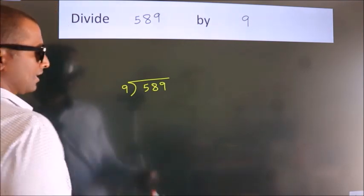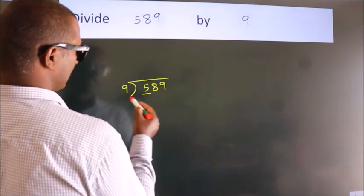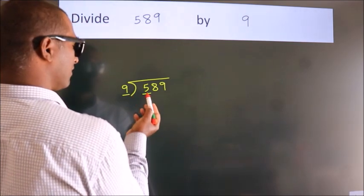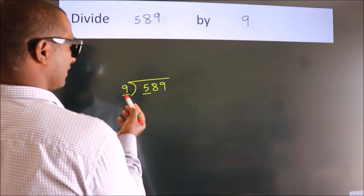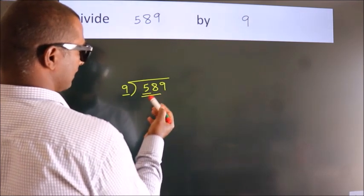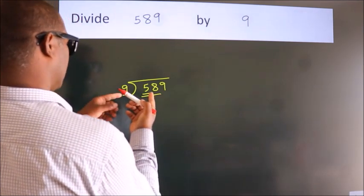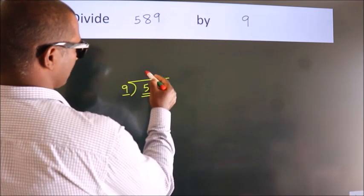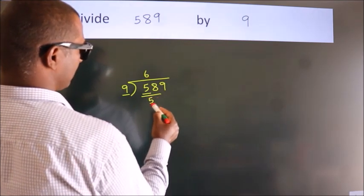Next, here we have 5, here 9. 5 is smaller than 9, so we should take two numbers, 58. A number close to 58 in the 9 table is 9 × 6 = 54.